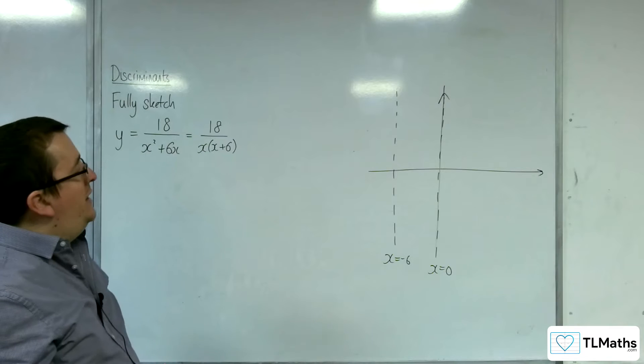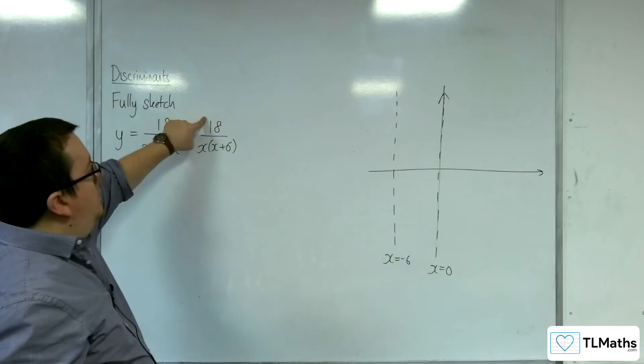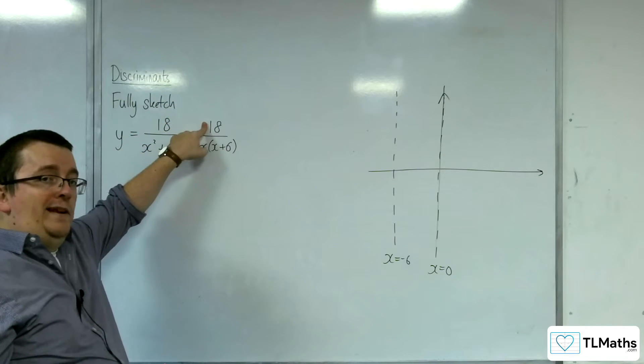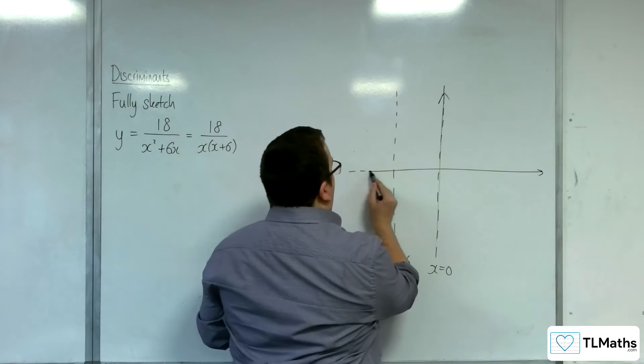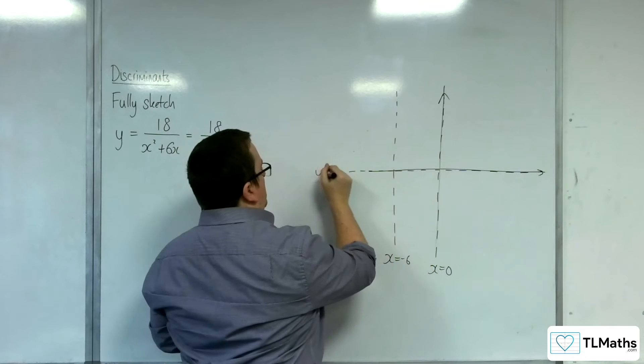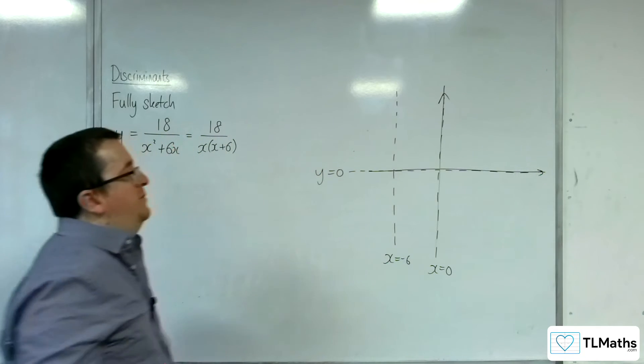How about a horizontal asymptote? Well, the power, the order of the polynomial in the numerator is certainly less than the one in the denominator, and so y equals 0 will be a horizontal asymptote.